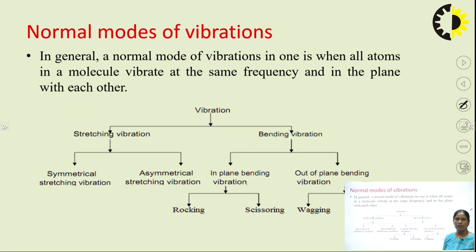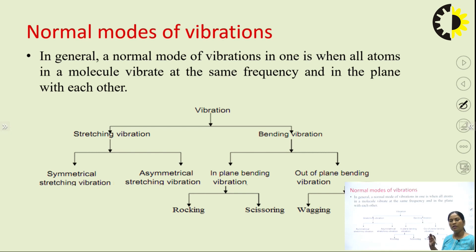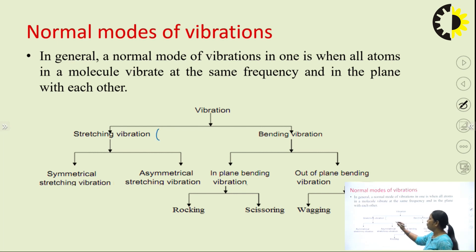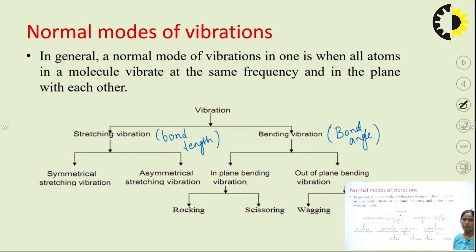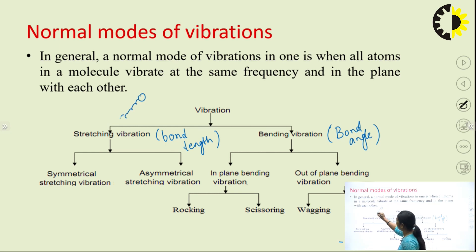Now coming to the point of what are the various types of vibration that can be studied during IR spectroscopy. There are 2 major categories of vibration. One is known as stretching vibration and another is known as bending vibration. The main difference is: in stretching vibration, bond length is going to change, while in bending vibration, bond angle is going to change but bond length remains the same.